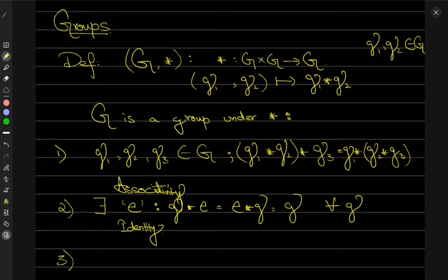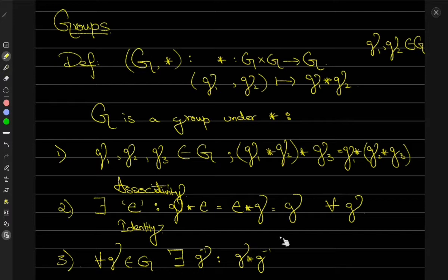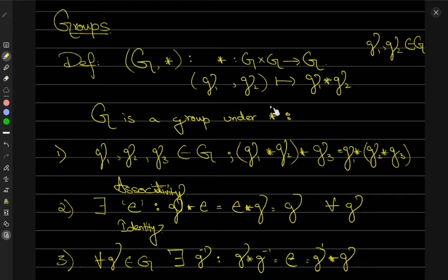The final property is the inverse property: for all G belonging to the set G, there exists an inverse G-inverse, such that composing G with this inverse gives the identity element — which is also the same as composing the inverse first with G. If this is satisfied, then we can say that G is a group under this binary operation star.